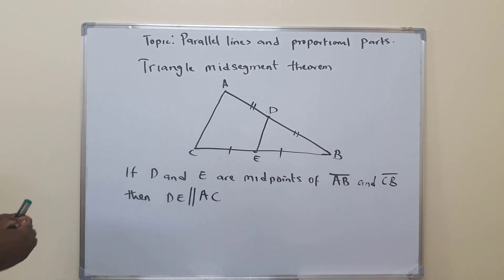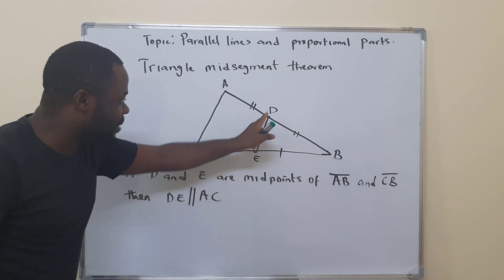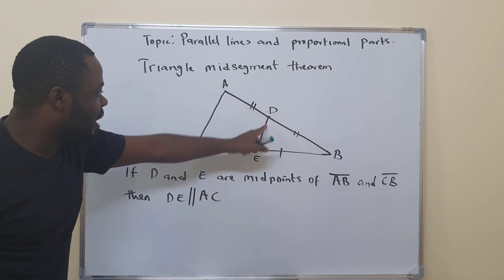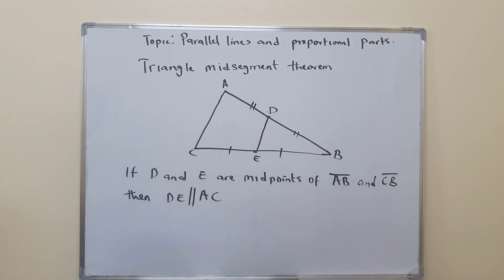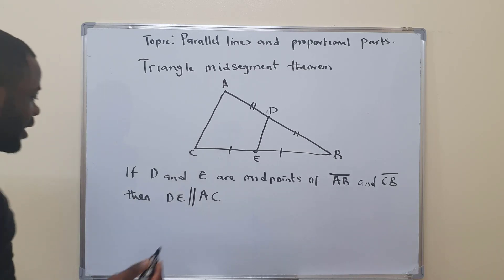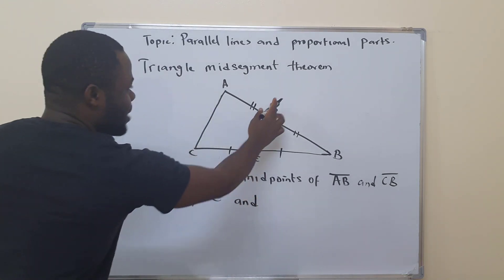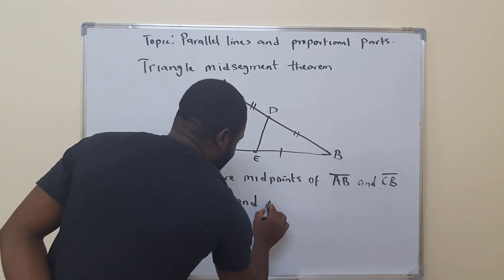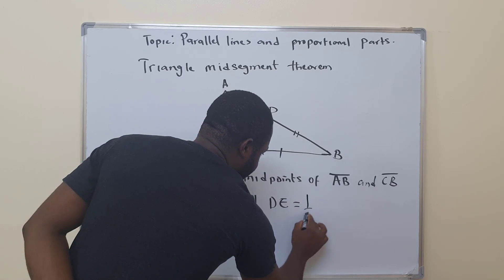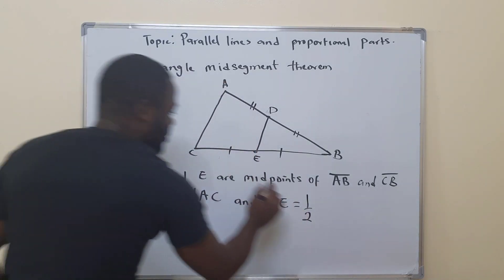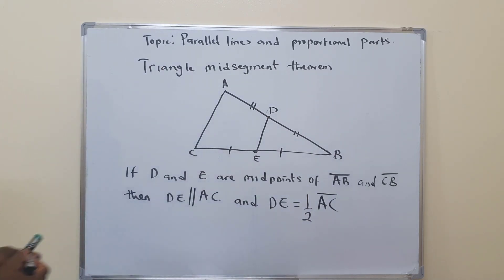If they are the midpoints of these two line segments, definitely this line segment will also be parallel to this line segment. Then it also says, DE must be half of AC.